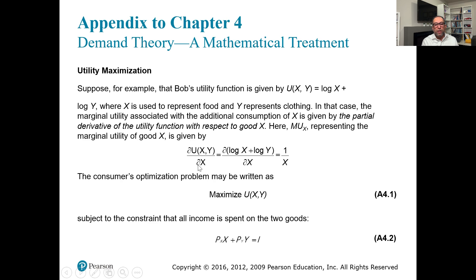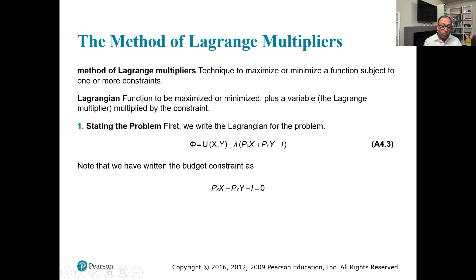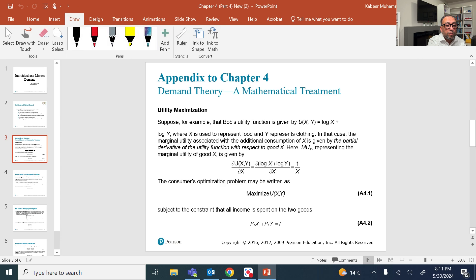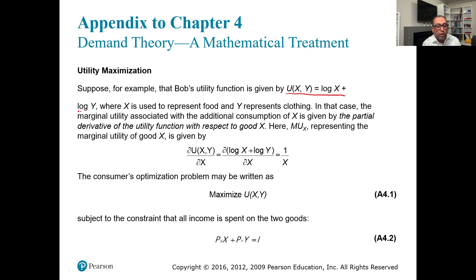We partially differentiate the utility function with respect to x, which represents food. So our utility function is log x + log y. When we want to find how much utility changes if we use one more unit of x, we take the partial derivative of this function with respect to x and we get that value.